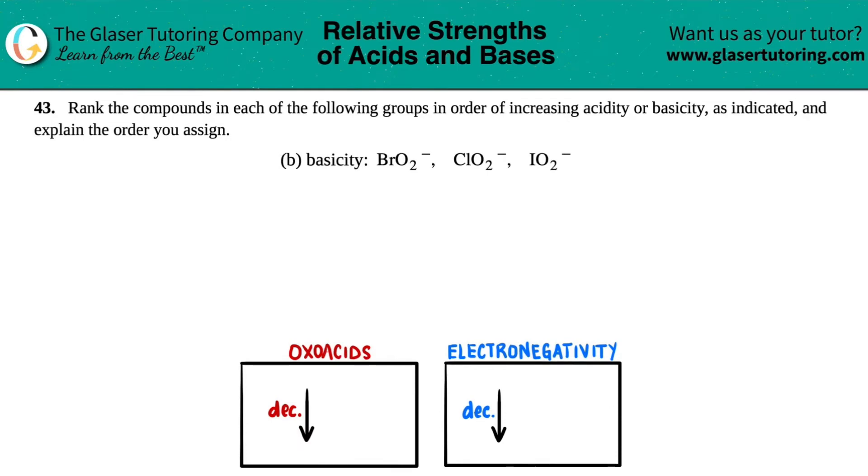Number 43: Rank the compounds in each of the following groups in order of increasing acidity or basicity as indicated and explain the order you assigned. In this case, for letter b, we have to go by increasing basicity.